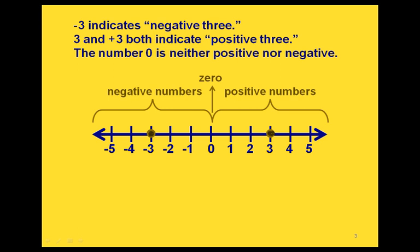Notice that zero, since it's right in the middle between the negative numbers and the positive numbers, we don't count zero as being either positive or negative.